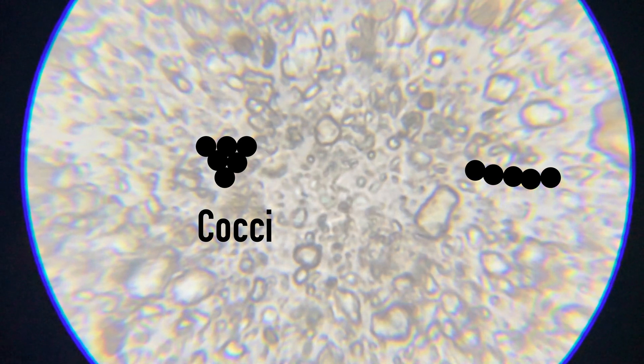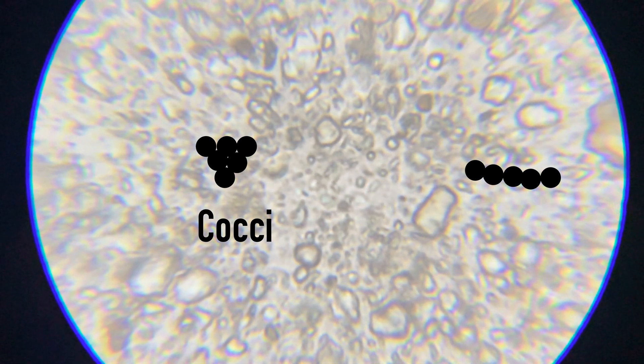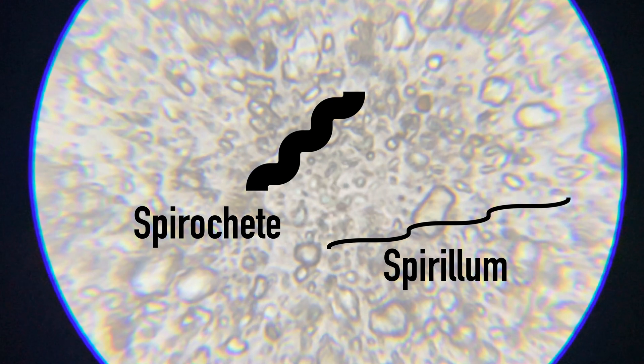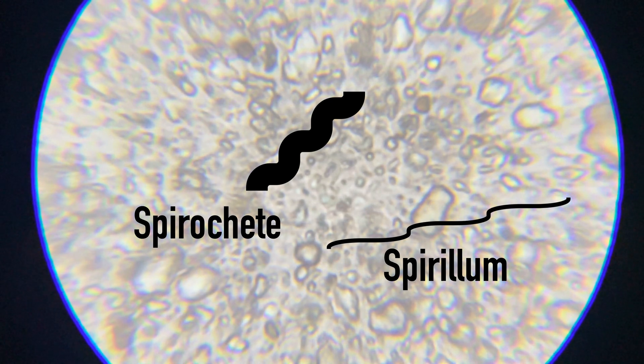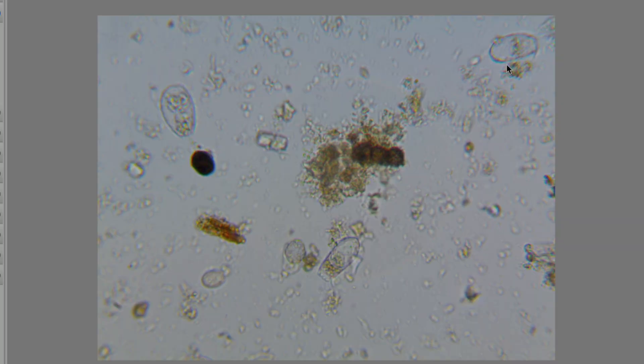The low oxygen or anaerobic disease-causing bacteria are identified as spirochetes and spirilla, among others, but these should take more caution when handling.